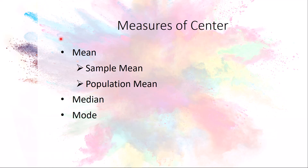We have three measures of center: the mean, the median, and the mode. The mean is basically the average — you take all numbers in the data set, add them up, and divide by the count. The median is the number in the middle. The mode is the number or numbers that repeat most often. A data set can have no mode, one mode (unimodal), two modes (bimodal), or three or more modes (multimodal).